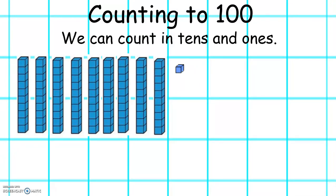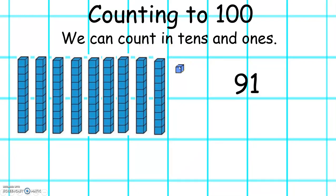Let's count in tens and ones: 10, 20, 30, 40, 50, 60, 70, 80, 90, 91. Our number is 91.